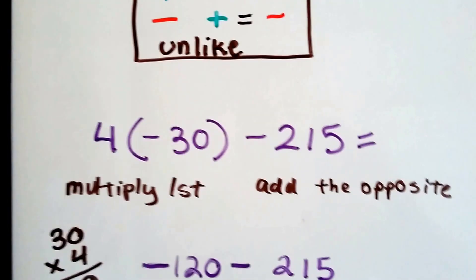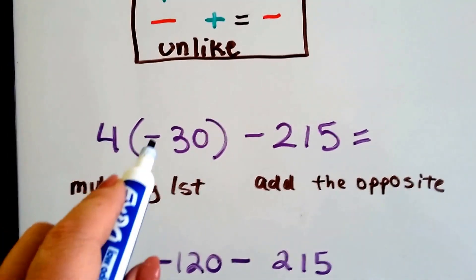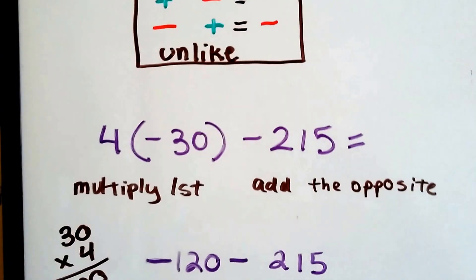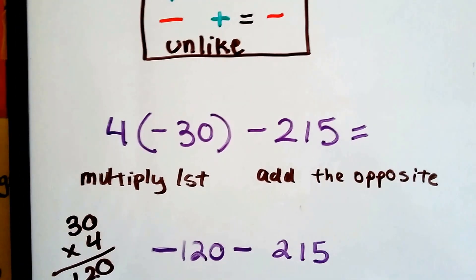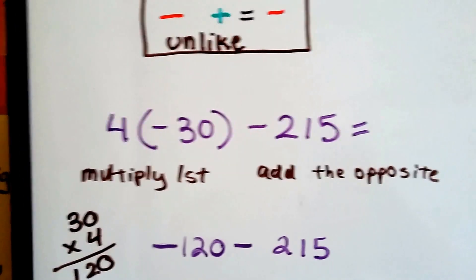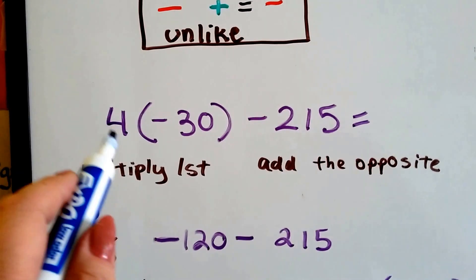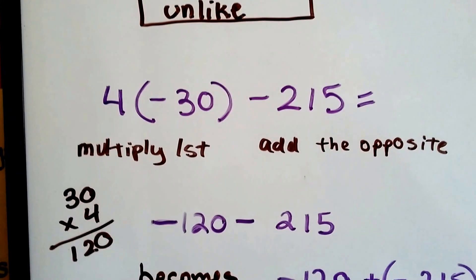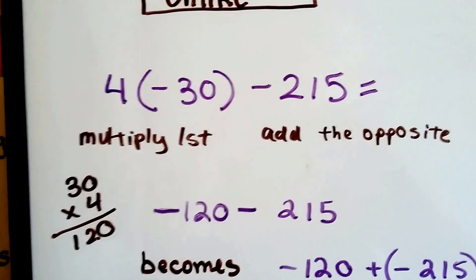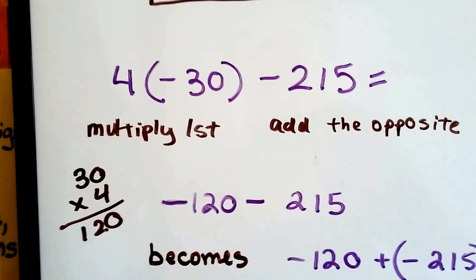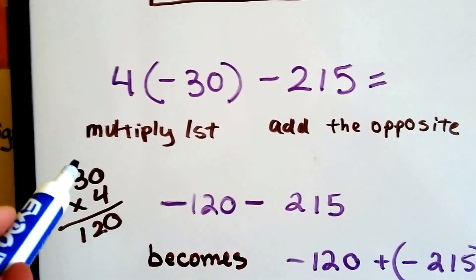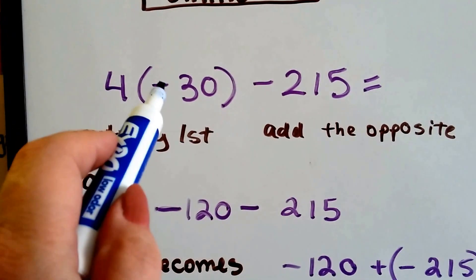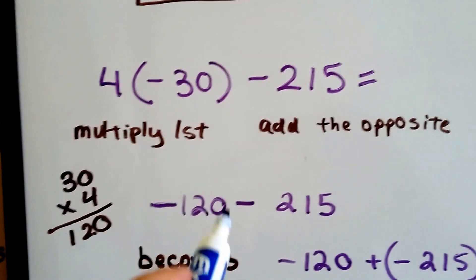Alright, so here's our first one. We have 4 times negative 30 minus 215. According to the order of operations, we have to multiply first. So 4 times negative 30 — we take the absolute value, that's how far it is from zero on the number line. 30 times 4 is 120. Because that's a positive and that's a negative, we have negative 120.